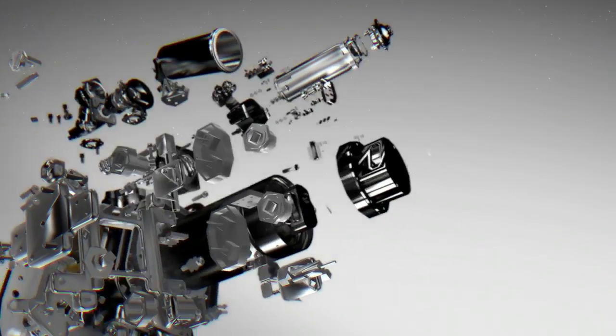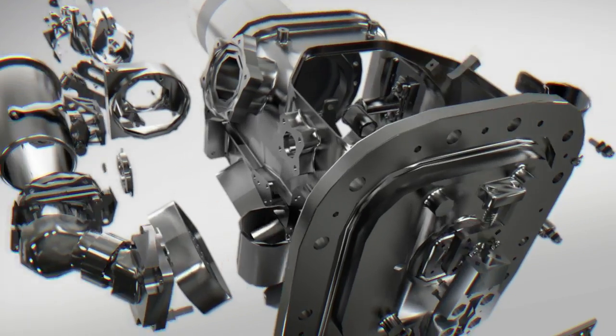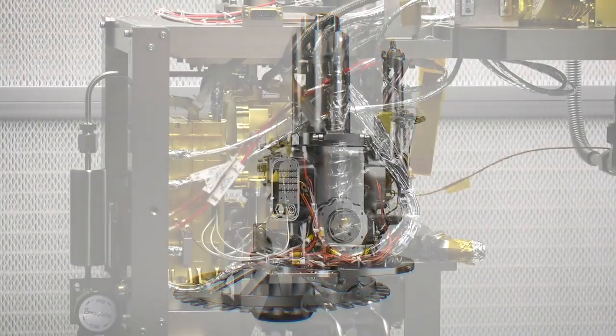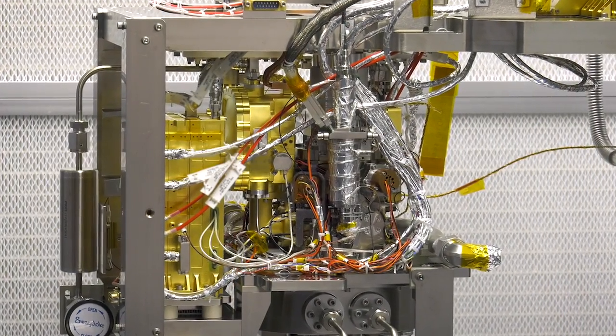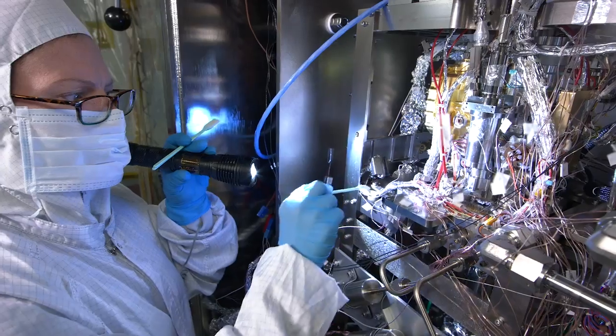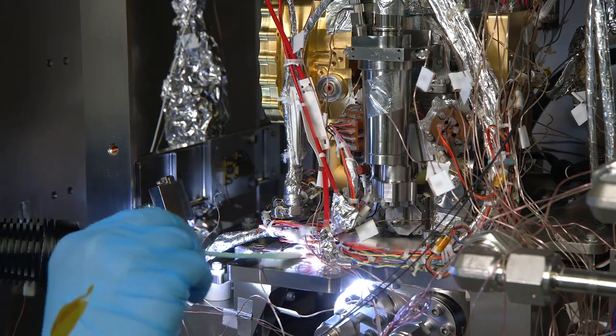The Mars Organic Molecule Analyzer, or MOMA, is the largest and most complex instrument on the rover. Its mass spectrometer subsystem and main electronics were built and tested at NASA's Goddard Space Flight Center, which also contributed mass spectrometers to NASA's Curiosity rover and MAVEN orbiter.